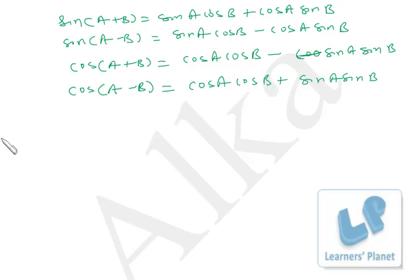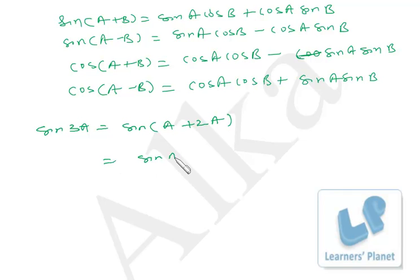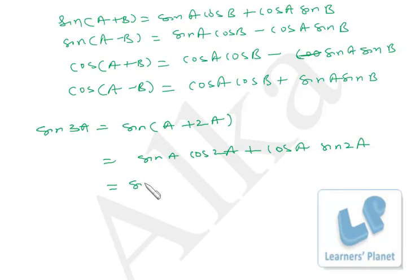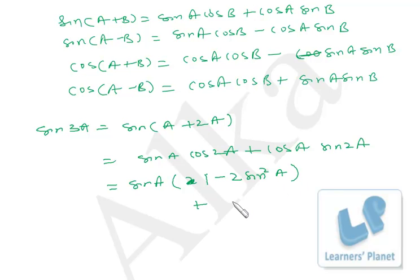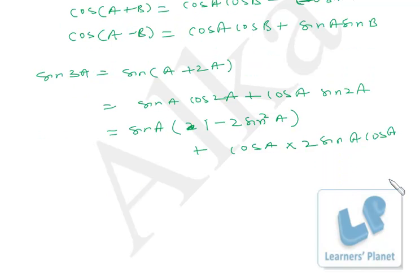Similarly you can calculate sin 3A and cos 3A. I'll just do one for you. Sin 3A = sin(A + 2A) = sin A cos 2A + cos A sin 2A. Now I know cos 2A, so I put the value of cos 2A in terms of sin A: cos 2A = 1 − 2sin²A. Similarly, sin 2A = 2 sin A cos A.